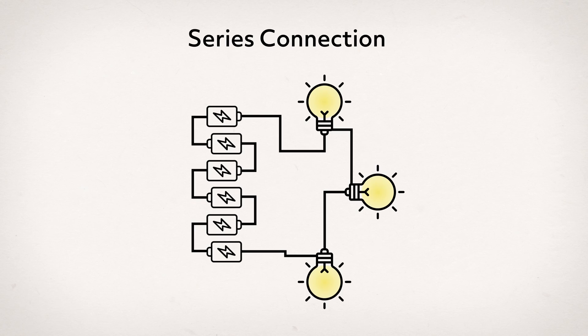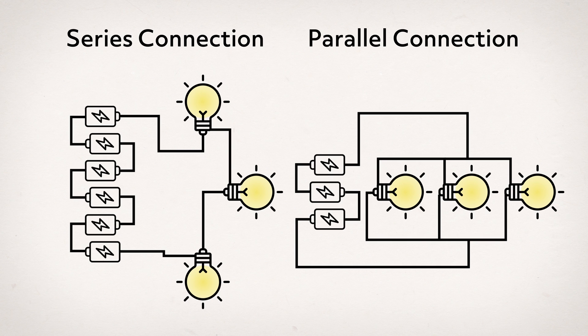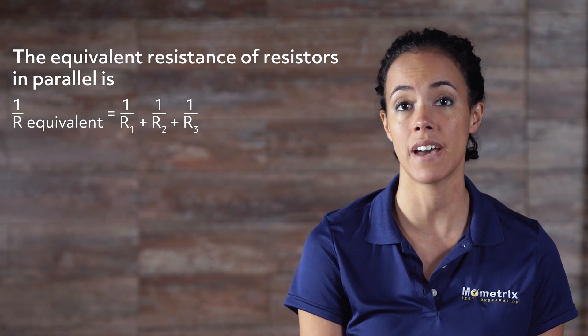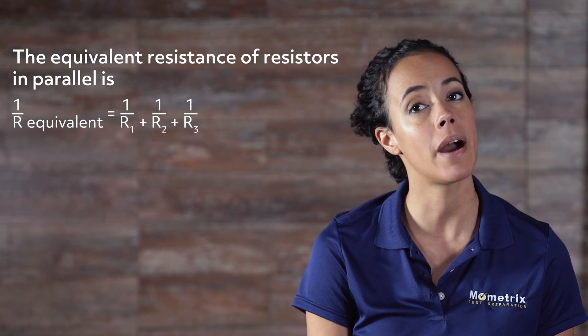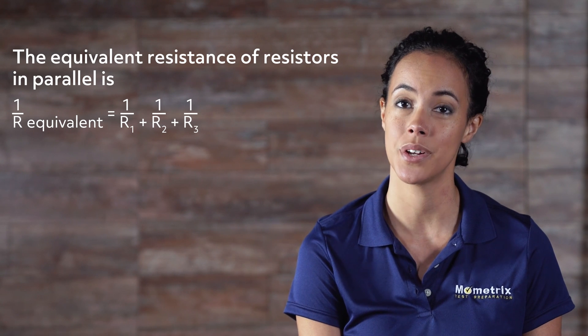An example of resistors in series is a string of old Christmas lights. The light bulbs form a series of resistors. Each bulb has a resistance. If one bulb burns out, the entire string of lights does not light up, because the current has been cut off. To make the lights work again, you need to find the broken bulb and replace it, which can take a while. Newer strings of lights don't have this problem, because the resistors are in parallel. This means they each have the same voltage across them but different currents. If one bulb burns out, the rest of the bulbs still work because they still have current. The equivalent resistance of resistors in parallel is: 1 divided by R-equivalent equals 1 divided by R1 plus 1 divided by R2 plus 1 divided by R3. This relationship follows from Ohm's Law, which shows us how the current branches into different resistors.